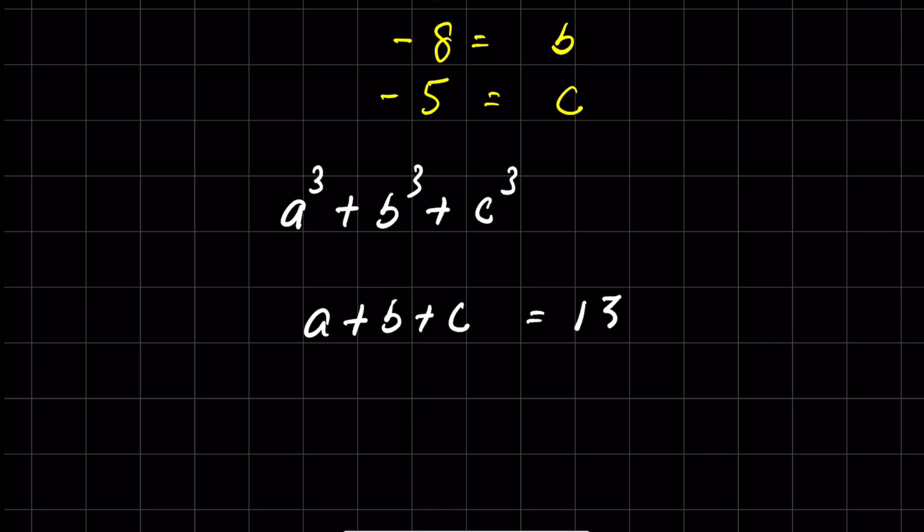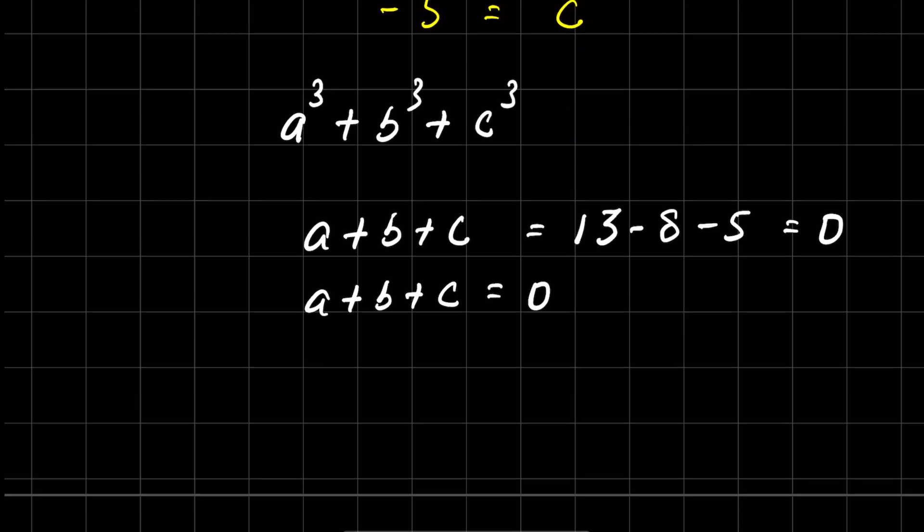we get 13 - 8 - 5 = 0. So whenever a + b + c = 0, in that case, the formula is a³ + b³ + c³ equals